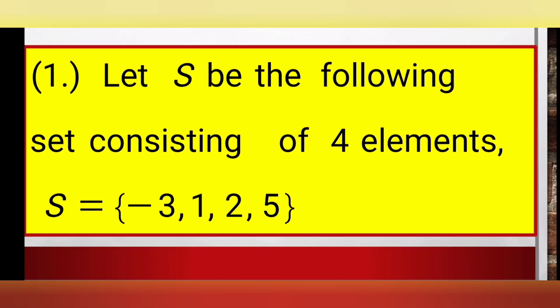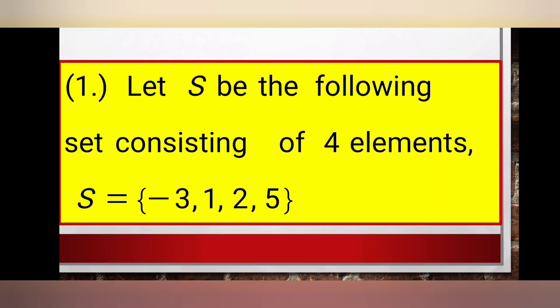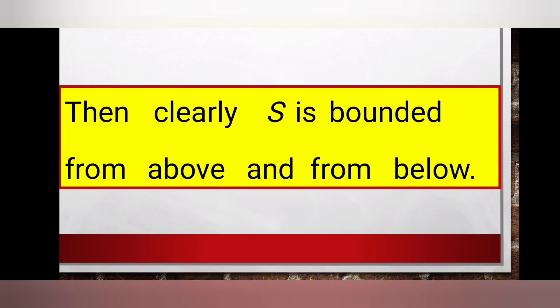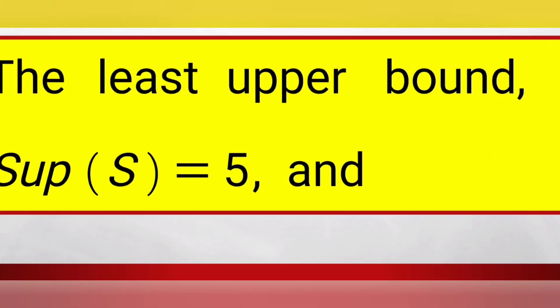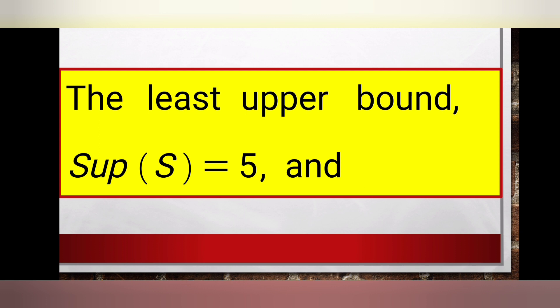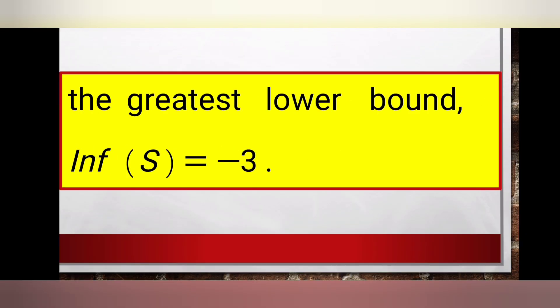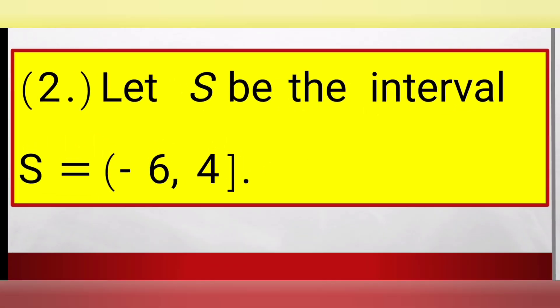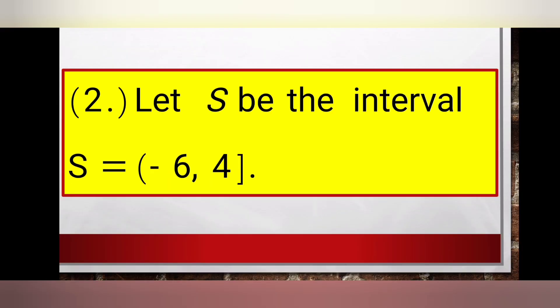Now we will look at some examples on infimum and supremum. Example one: let S be the set consisting of four elements — minus three, one, two, and five. We can see that S is bounded from above and from below. The least upper bound of S is five, while the greatest lower bound of S is minus three.